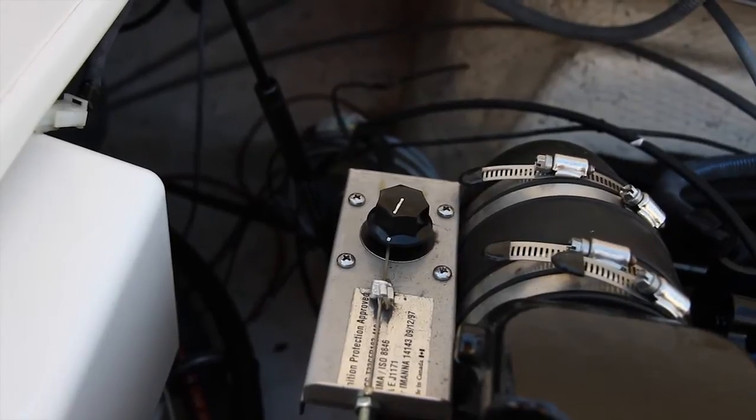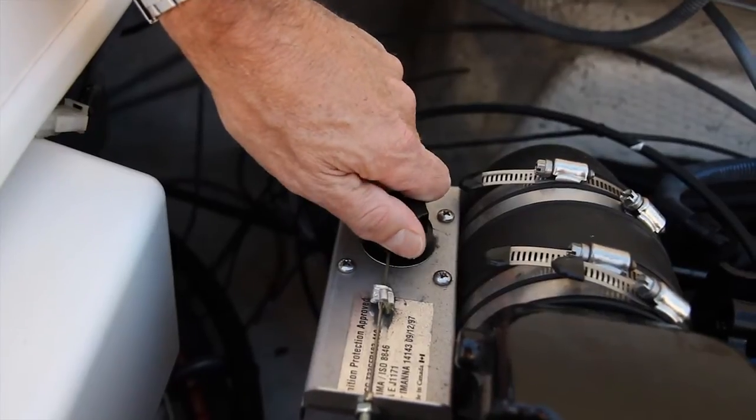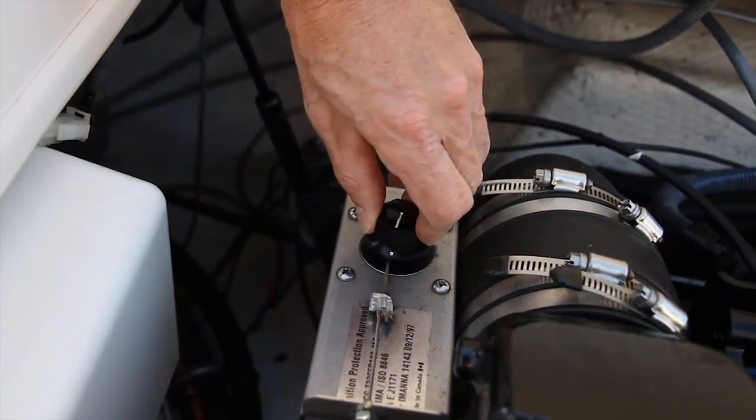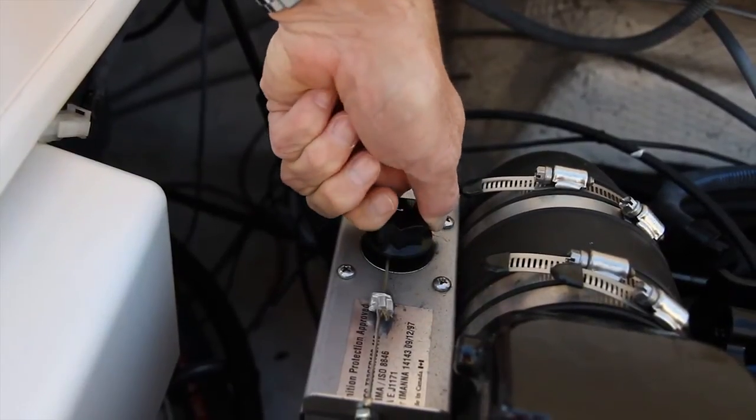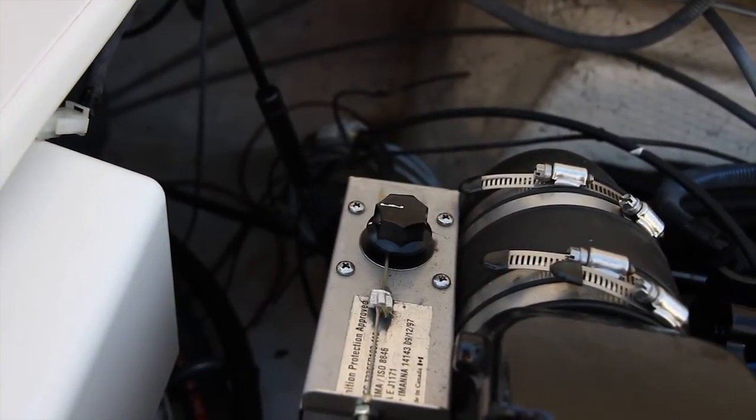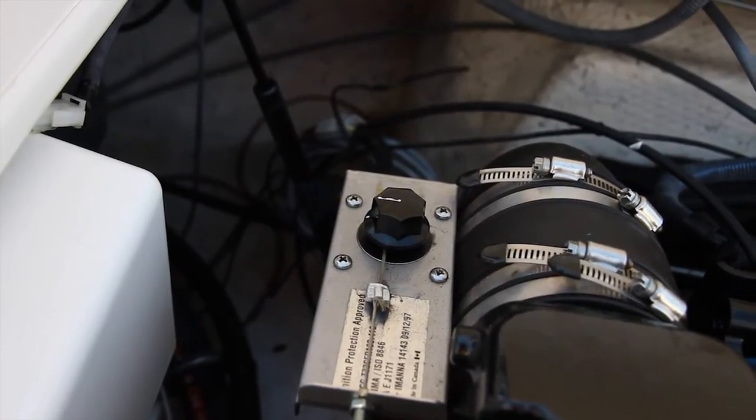Locate the knob and turn it clockwise. It should already be snug. Now turn it counterclockwise approximately three quarters to a full turn back and let go. Now have someone turn the key on and the knob is designed to turn about three quarters of a turn in a clockwise direction.